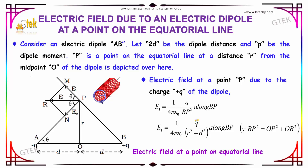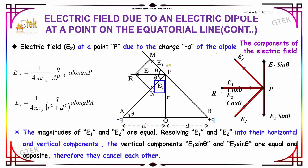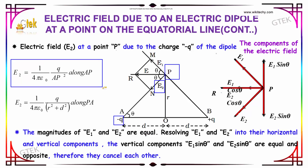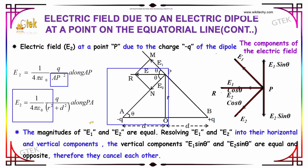We get E1 equal to 1 over 4π epsilon-naught, Q divided by R squared plus D squared, along BP. Similarly, the electric field E2 at point P due to charge minus Q is E2 equal to 1 over 4π epsilon-naught, Q divided by R squared plus D squared, along PA, applying the same Pythagorean logic for AP.